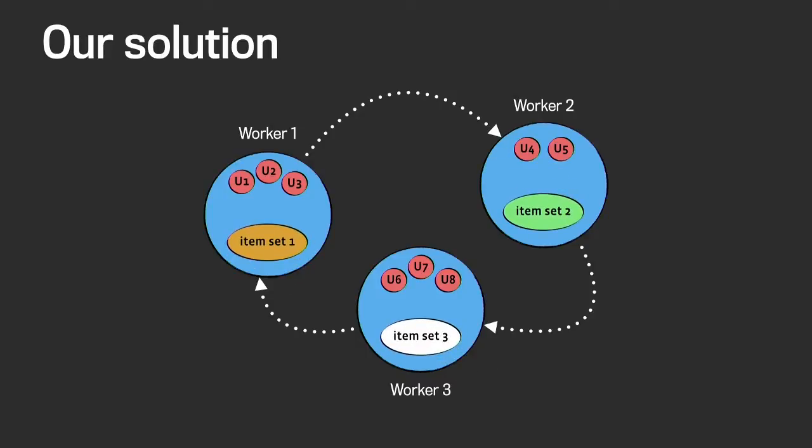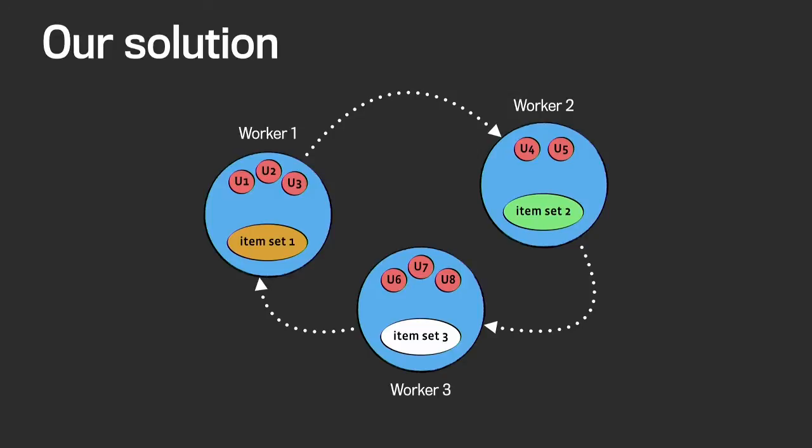We can see that the problems from before are gone. The amount of network traffic no longer depends on the number of examples or number of users — it only depends on the number of items, because the only thing being sent is item feature vectors. Memory required is similarly decreased to the number of items instead of the number of known ratings. We no longer have problems with high-degree items, because all ratings are stored inside the user and item degree doesn't affect memory calculations. And modifications in stochastic gradient descent are exactly equal to the sequential solution, because we are always working on the latest versions of user and item feature vectors.